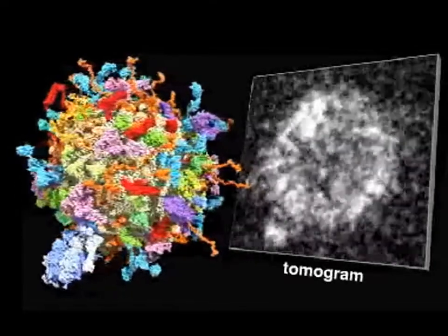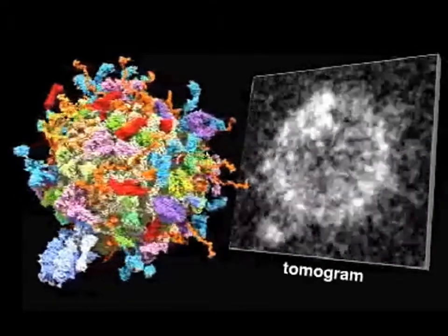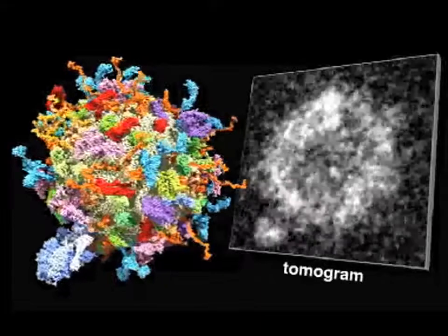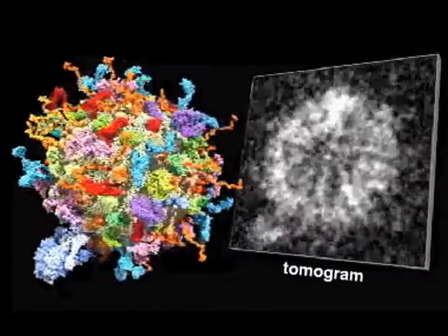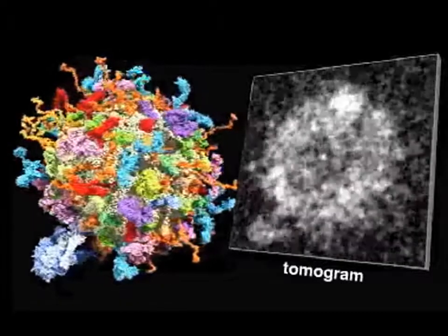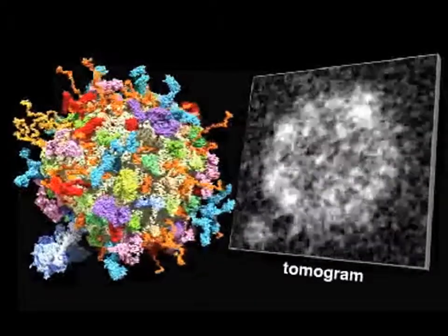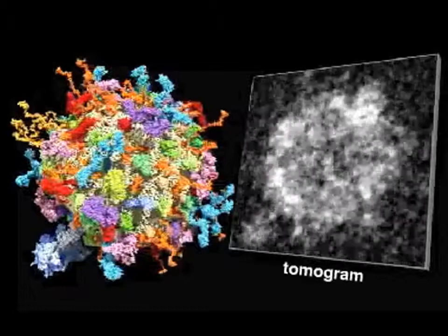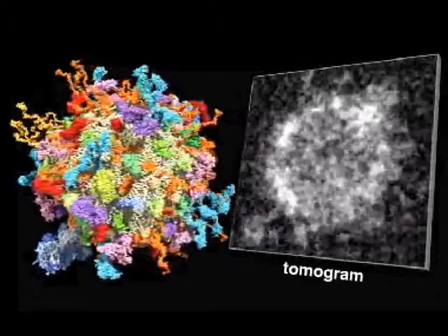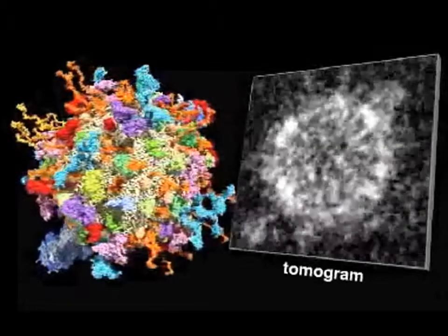Note that only 70% of the membrane proteins estimated to be present in the membrane are depicted in the model. A real vesicle would be covered by an even more dense forest of proteins.